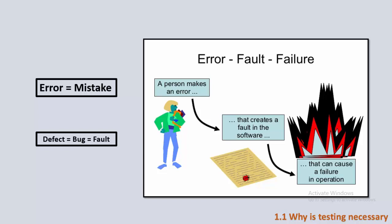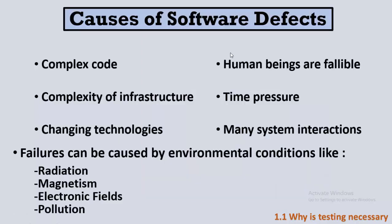When we talk about defect, bug, or fault, we are talking about the same thing — that is what the software tester detects when performing software testing. If the tester doesn't find this defect or bug or fault, it could cause a failure in operation — the user tries the software and it fails. But not all errors or mistakes cause defects in the software.